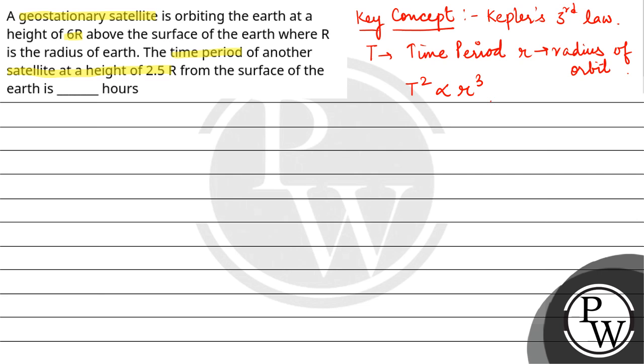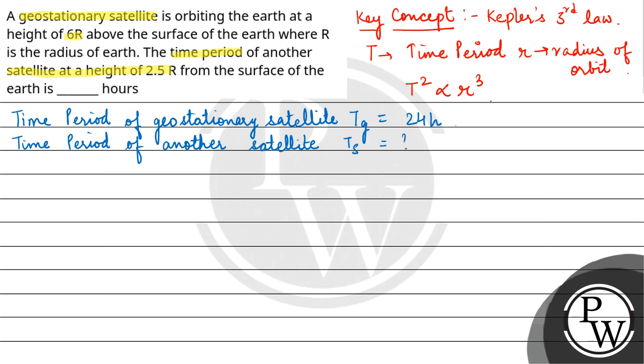In your question, there's one geostationary satellite and one other satellite. Firstly, the time period of geostationary satellite, let's say TG is equal to 24 hours. And the time period of another satellite is, let's say, TS, which we need to find out. Let's talk about the orbital radius.